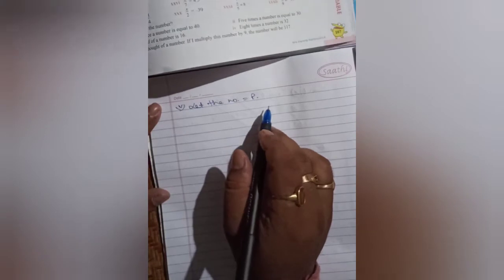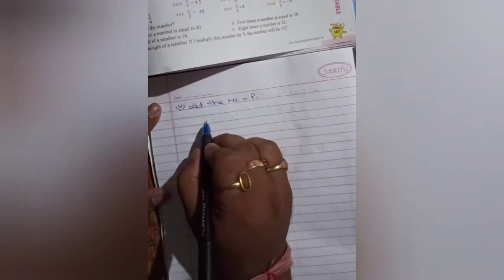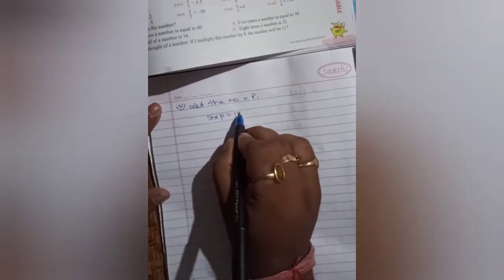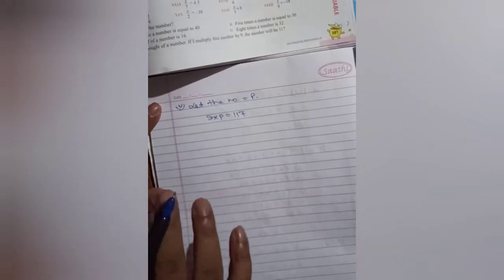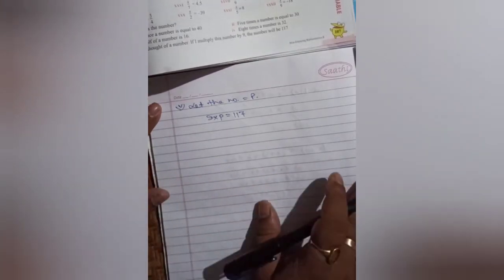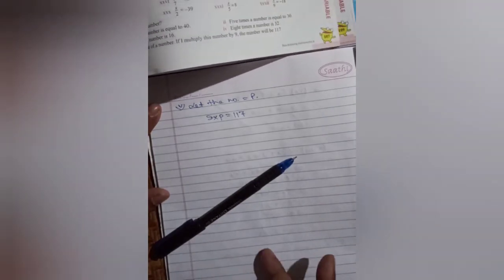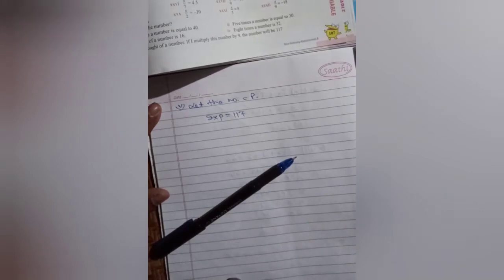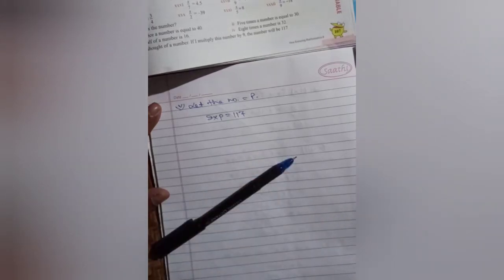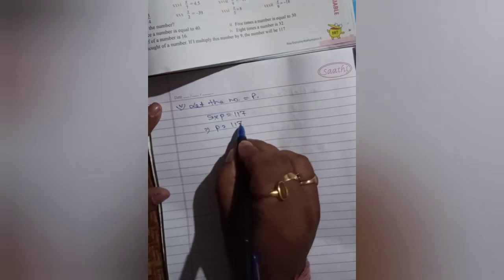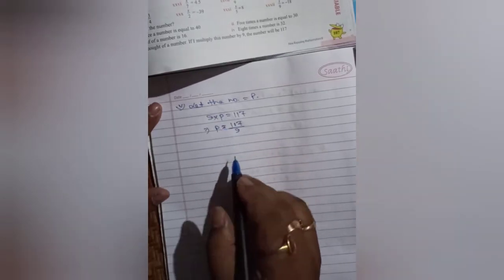the number will be 117. If I multiply the number by 9, 9p equals 117. The question is a little twisted: twice a number equals 40 means 2 into x; 5 times a number equals 30 means 5x equals 30; 8 times a number means 8x equals 32. Here same thing: 9 into p equals 117. The question is given a little twisted so that students can understand it in a different way.